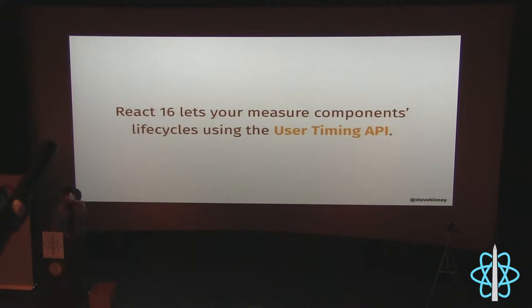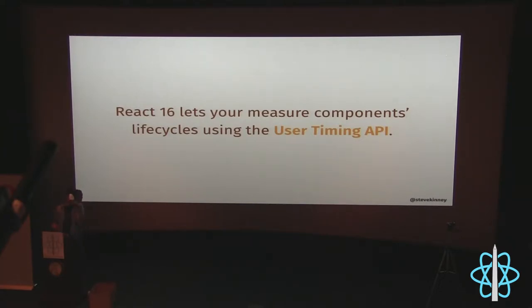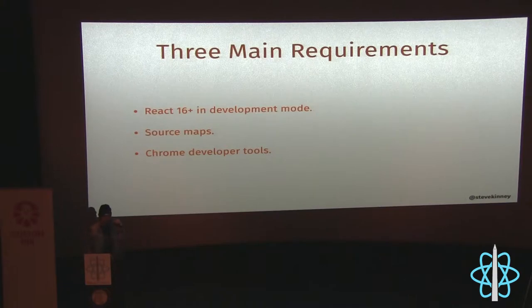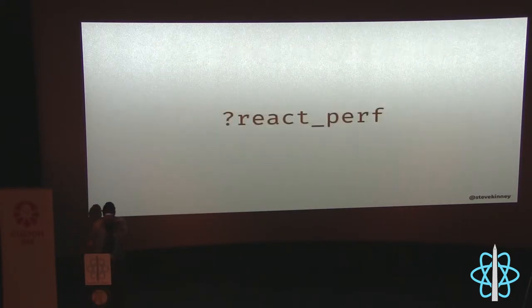React 16 lets you use web standards to measure performance using the User Timing API, which is supported in most browsers. This API lets you pull up DevTools and have different frameworks — or your own code — put markers in there, so you can see where things start and stop. You'll get that alongside the other flame graphs in the DevTools. To support this in React you need React 16 or higher, source maps, and developer tools.